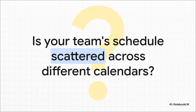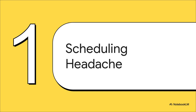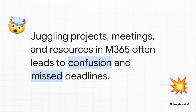Today we're going to untangle this common mess and find a way to get some real clarity. For so many teams, this calendar chaos isn't some rare occurrence — it's just the default way of working in a busy organization, even with all these powerful tools. The simple act of managing projects, booking rooms, and scheduling meetings across the M365 suite just leads to everything being fragmented.